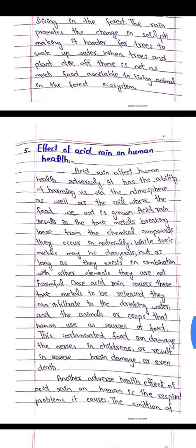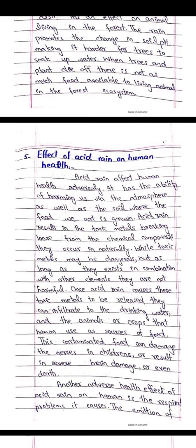The effect of acid rain on human health: acid rain has the ability of harming us through the atmosphere as well as through the soil and the food grown in it. Acid rain results in toxic metals breaking loose from the chemical compounds in which they occur naturally. While toxic metals may be dangerous, as long as they exist in combination with other elements they are not harmful. Once acid rain causes these toxic metals to be released, they can infiltrate drinking water and the animals or crops that humans use as sources of food.